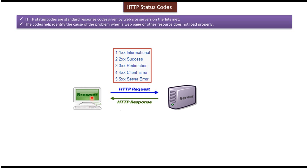Suppose a client is requesting some page from the server, and that page has moved to some other location. Then the server will send a 300 series redirection HTTP status code back to the client.